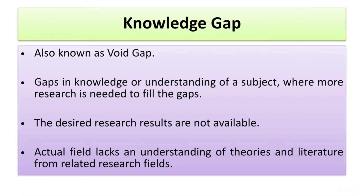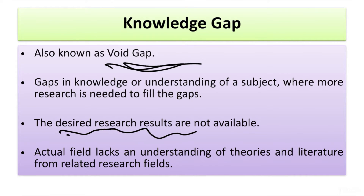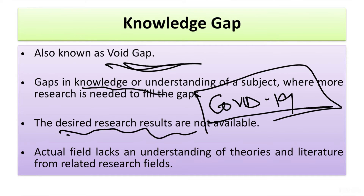The next type of research gap is the knowledge gap, also known as the void gap. This occurs when there is a lack of desired research results or a lack of understanding or knowledge in a certain field. For example, earlier we did not have any knowledge about COVID-19. As technology keeps changing and new things emerge, the actual field lacks understanding of the theories and literature from related research fields.